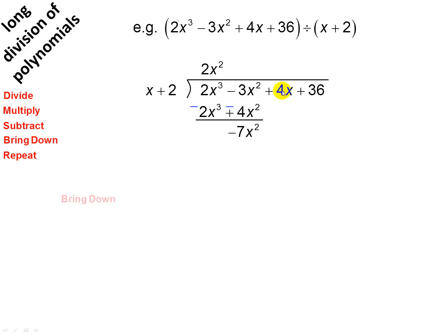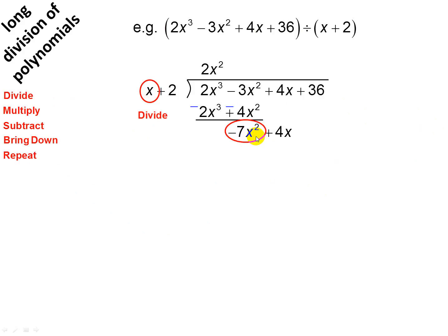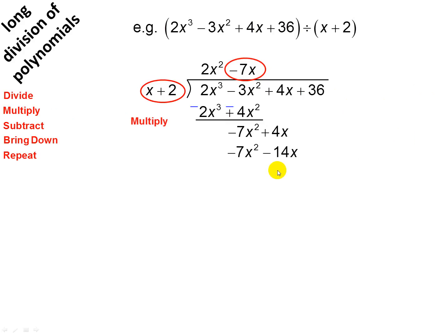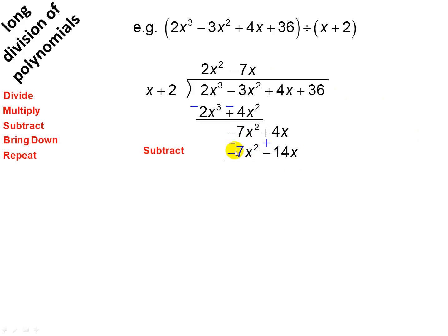Bring down the next term. Now we're going to divide again: x into minus 7x squared gives you minus 7x. Then we're going to multiply: minus 7x times x plus 2 gives you minus 7x squared minus 14x. We're going to subtract — change the sign on the bottom line and add. That goes; 4x plus 14x gives you 18x.